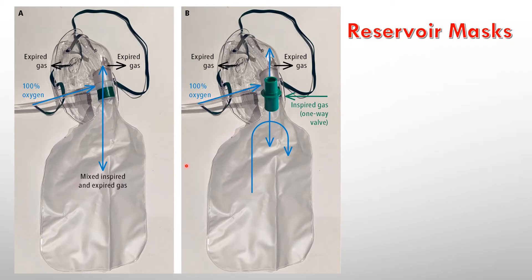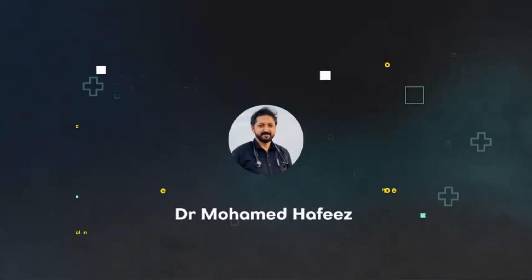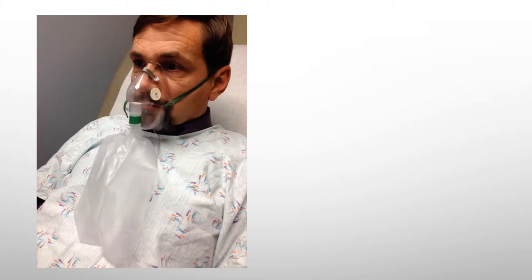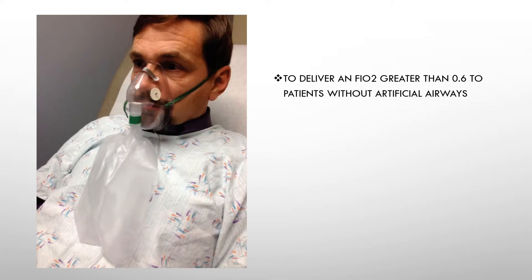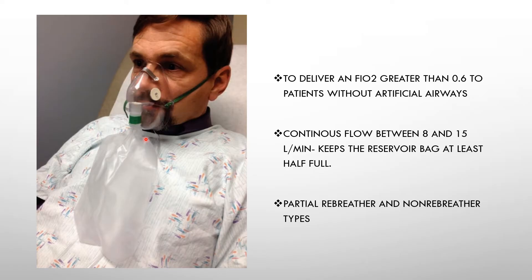Today I will be discussing the differences between these two masks, their uses and applications. A reservoir mask is used to deliver an FiO2 of greater than 60%, and it requires a continuous flow of oxygen of around 8 to 15 liters to keep the reservoir full. There are two types: the re-breathing and the non-re-breathing mask.